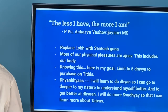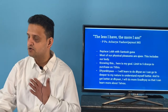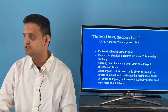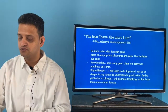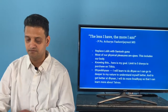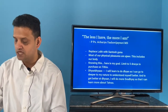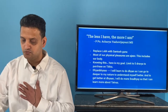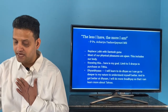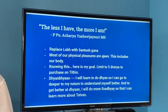Most of our physical possessions are Ajiv, including our own body. We spend so much time maintaining our Ajiv things. Knowing this, my personal goal is to limit purchases to five dravyas on tithis, and ideally reduce to zero. My second goal is dhyan — I will learn meditation to go deeper into my own nature and understand myself better. And to grow in jnana, I will do swadhyaya so I can learn more about the tattvas.